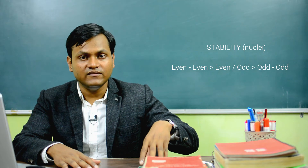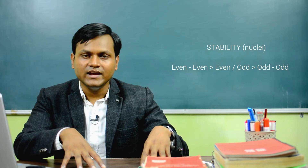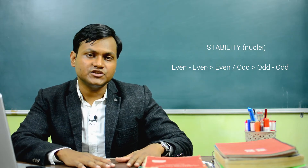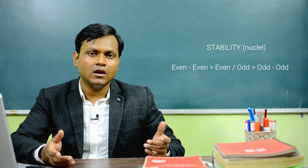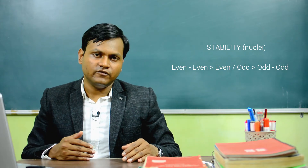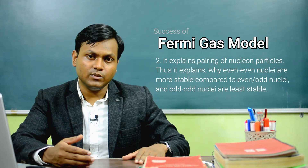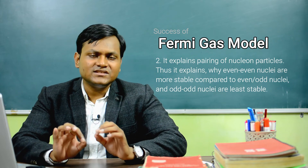Even-even nuclei have an even number of both protons and neutrons, leading to complete filling of all energy levels with no unpaired nucleons — making them most stable. Even-odd or odd-even nuclei have one unpaired neutron or proton, making them less stable. Odd-odd nuclei, with odd numbers of both neutrons and protons, have two unpaired nucleons and are the least stable. The Fermi gas model therefore explains why even-even nuclear structures are much more stable through the pairing effect.